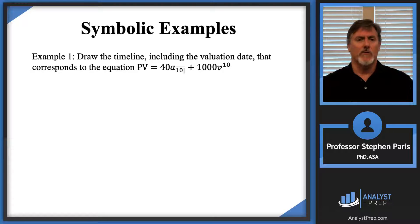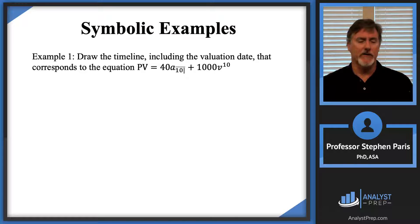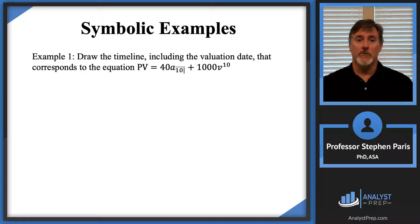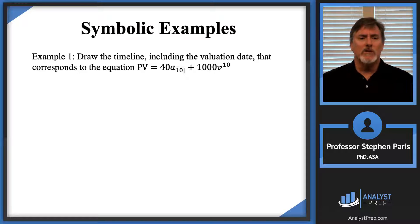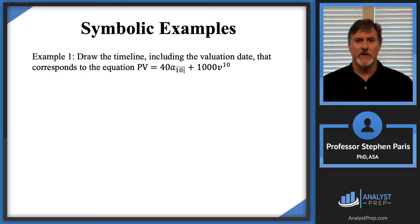Let's get right to example one. Instead of giving you a timeline and asking you to give me a representation of the value of the annuity at a given valuation date, I'm going to turn it around and ask you to draw the timeline. When I draw a timeline, I have to include the valuation date. That corresponds to this equation: the present value is 40 times a-angle-10 plus 1000 times v to the 10th.